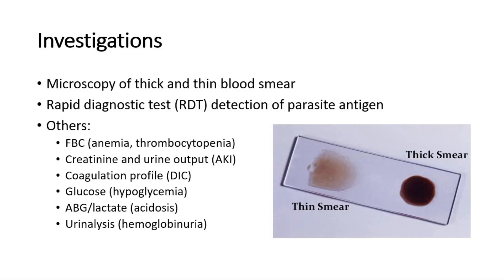For investigation to diagnose malaria, we must do immediate blood testing with microscopy of the thick and thin blood smear, which is quite sensitive and specific in experienced hands. Another test is the rapid diagnostic test for detection of parasite antigen, which can be used for initial screening if expert microscopy is unavailable, for example out of working hours. Other investigations include full blood count, creatinine and urine output, coagulation profile, glucose level, ABG and lactate, and urinalysis.